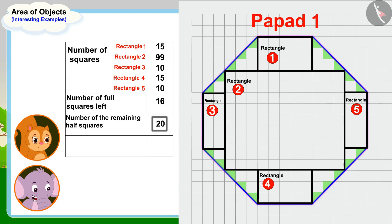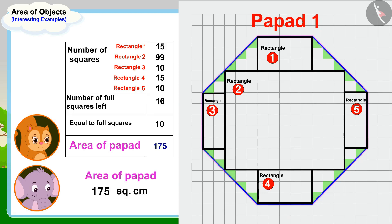Now this is very easy to find the area of this popper. We just have to add the numbers of all these squares. Look Chanda, there are 175 squares in total in the area of this popper. In other words, the area of this popper is 175 square centimeters, Appu explained to Chanda.